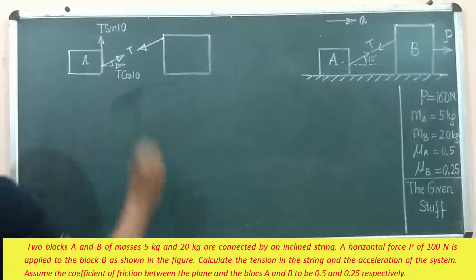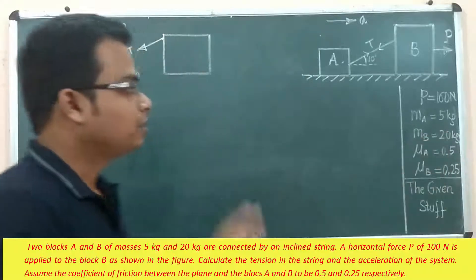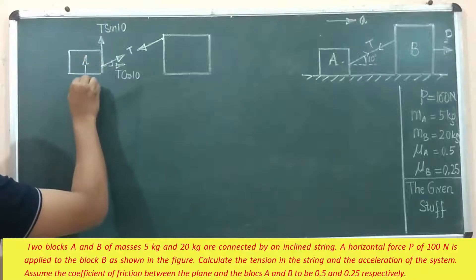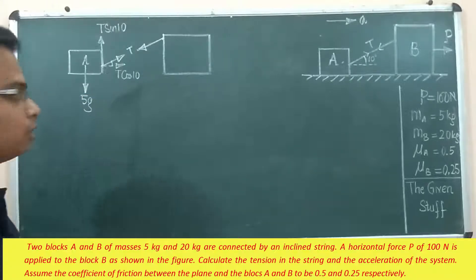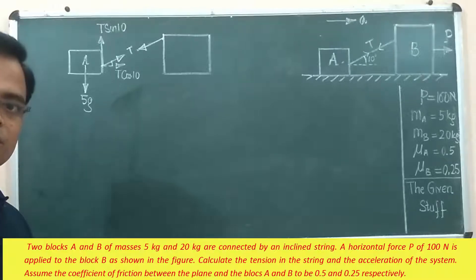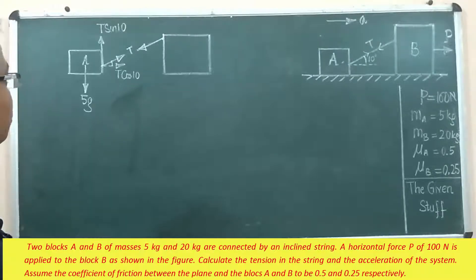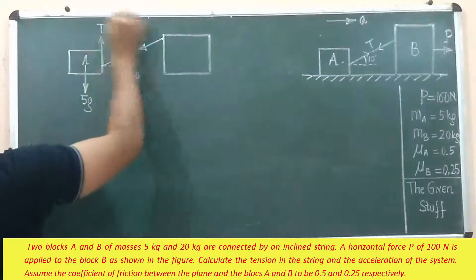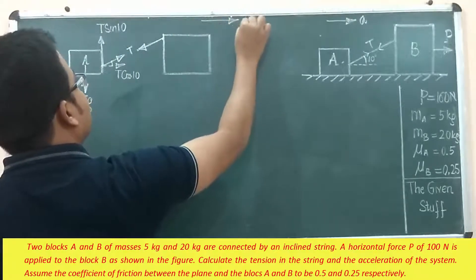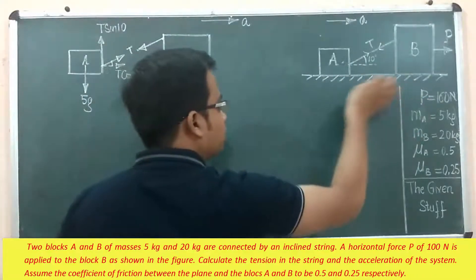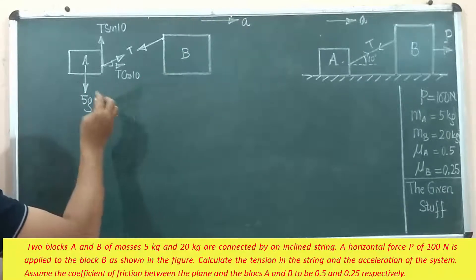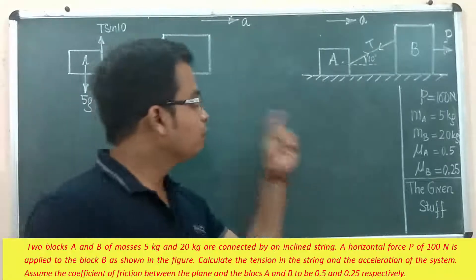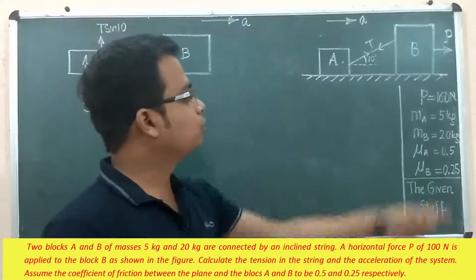Block A has a mass of 5 kg, so the force due to gravity in the downward direction is 5g — that's the force with which the earth is pulling this block downward. The motion is happening in the rightward direction since force P is applied towards the right. Both block A and block B will also experience friction. The coefficient of friction for block A is 0.5 and for block B it is 0.25.